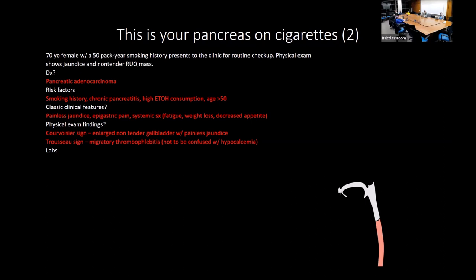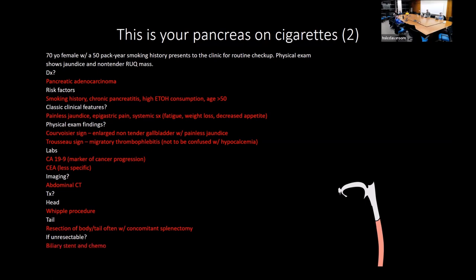Tumor markers for pancreatic cancer: CA 19-9 is the key one; CEA is less specific. Imaging is with abdominal CT. Treatment depends on location: Whipple procedure (pancreaticoduodenectomy) for head of pancreas, distal resection for tail. If unresectable, palliative treatment includes biliary stenting and chemotherapy.